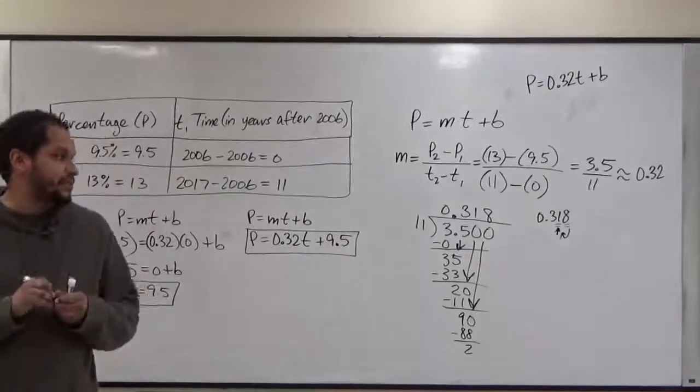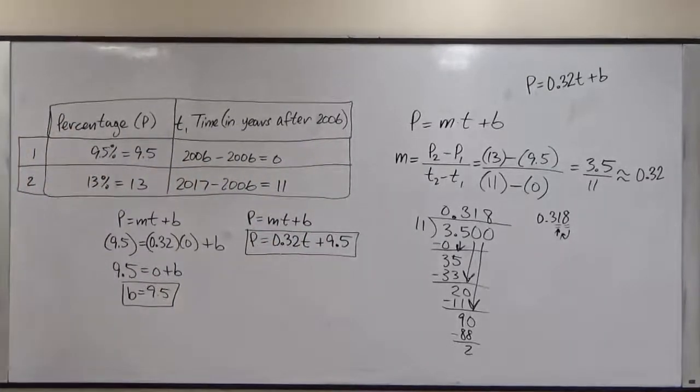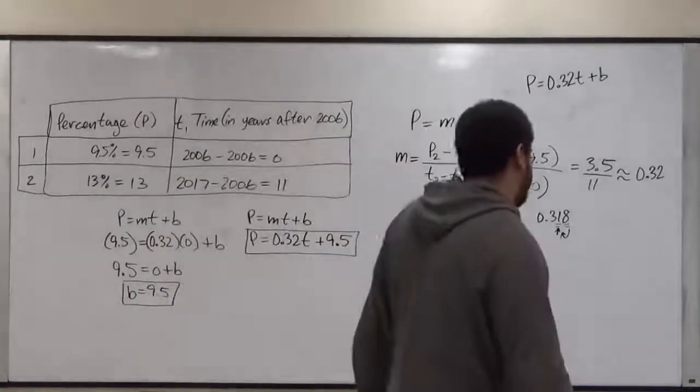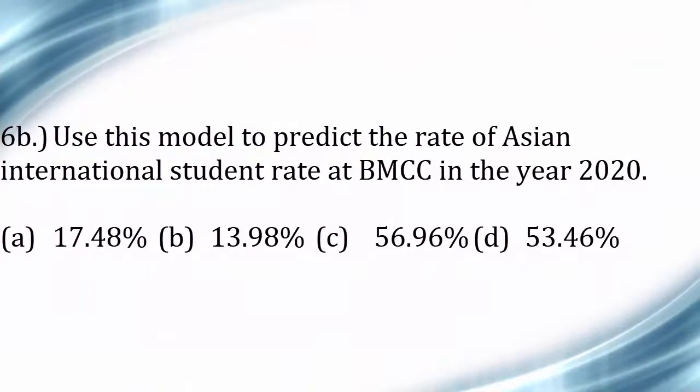To do the second component of this, we're going to add another variable to this table. The reason why we're adding another variable is because the question says, use this model to predict the rate of Asian international student at BMCC in the year 2020.